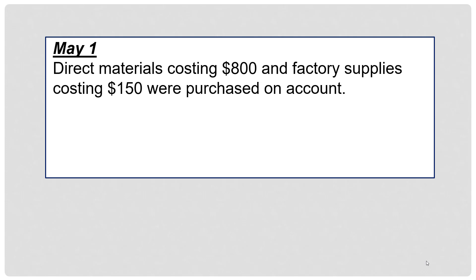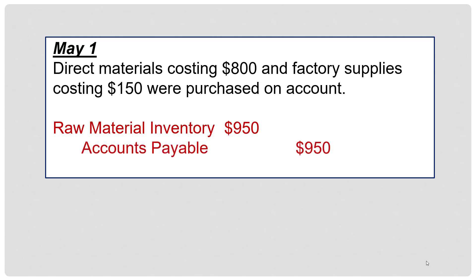On May 1, direct materials costing $800 and factory supplies costing $150 were purchased on account. When you buy materials, whether direct or indirect, you will increase the raw material inventory account. We'll add these together for $950 and credit accounts payable for $950 since they were purchased on account.